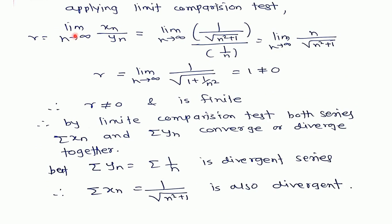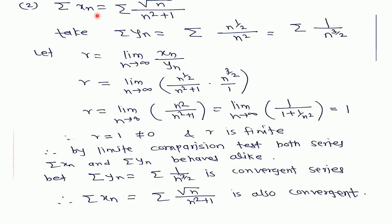Applying the limit comparison test: r = limit as n→∞ of xn/yn. Computing this limit gives r = 1, which is not equal to zero and is finite. Therefore by the limit comparison test both series xn and yn behave alike. Since yn = 1/n is the p-series with p ≤ 1, it is divergent. Therefore series xn is also divergent by the limit comparison test.